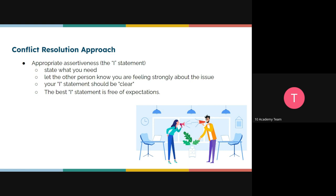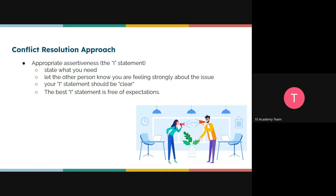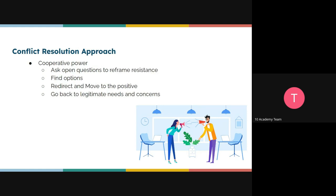The next one is cooperative power. Here you ask open questions and refrain from resistance. Whereas appropriate assertiveness focuses on you, cooperative power focuses on the other person — how should you position yourself toward them? You should ask open questions, look to find options, cooperate together, be direct, and move toward a positive view.